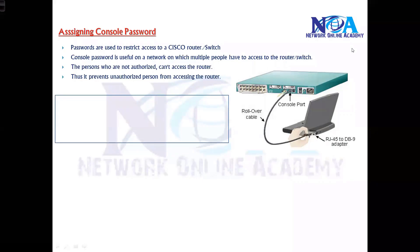The next thing we'll try to understand is the console password assignment. We did the console connection and we are accessing the command line of the router or the switch through the console connection. Now you may want the Cisco router or switch to be configured with some password so that we can restrict access to the command line via console connection.